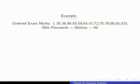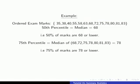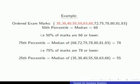We'll work through an example with 13 exam marks. The 50th percentile is the median, which is 68 — telling us that 50% of our marks are 68 or lower. The 75th percentile is the same as the upper quartile: the median of 68, 72, 75, 78, 80, 81 and 83, which is 78 — meaning 75% of our marks are 78 or lower. The 25th percentile is the lower quartile: the median of 35, 38, 40, 55, 58, 63 and 68, which is 55 — meaning 25% of our marks are 55 or lower.